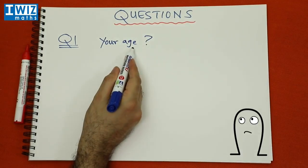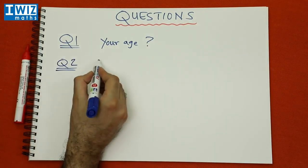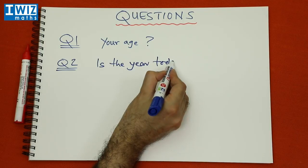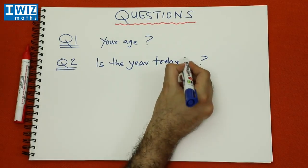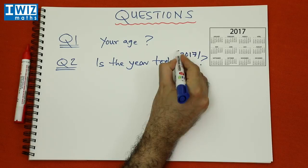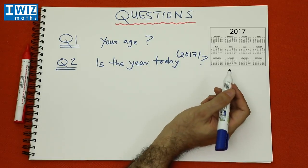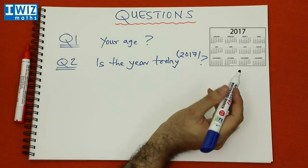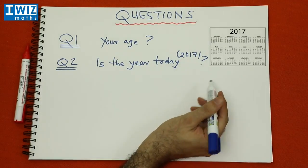You know what your age is — the question is whether your age is a prime number or not. Here's another question: is the year today a prime number or not? Today we are in the year 2017, so the question is whether 2017 is a prime number. You could be looking at this question in 2019, 2020, or 2021 — whatever the year, work out whether that year is a prime number or not.